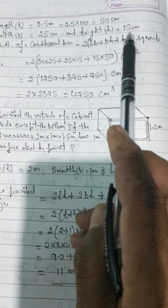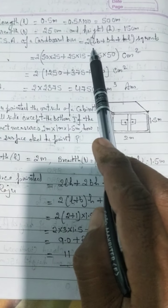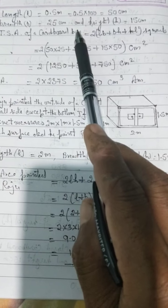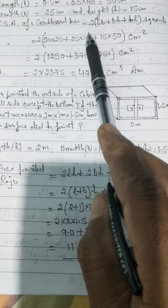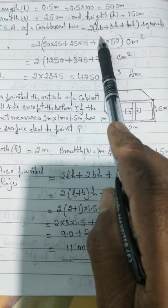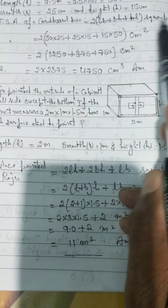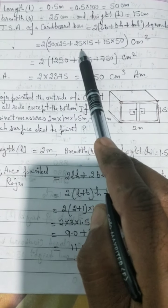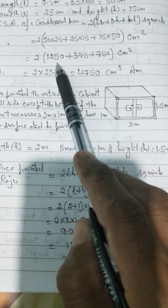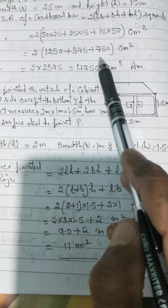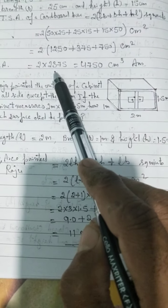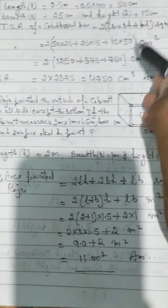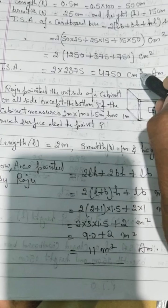Length = 50 cm, breadth = 25 cm, height = 15 cm. The closed cardboard box is in cuboidal shape, so TSA = 2(lb + bh + hl) = 2(50×25 + 25×15 + 15×50) = 2(1250 + 375 + 750) = 2 × 2375 = 4750 square centimeters. That is the total surface area.